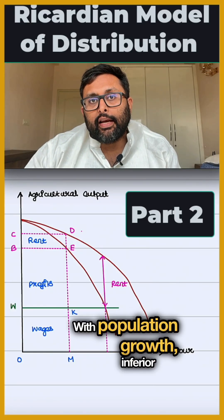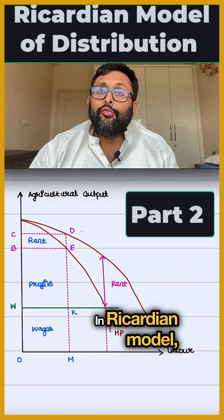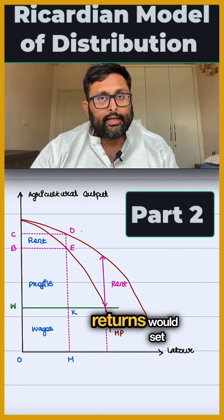With population growth, inferior land is brought under cultivation. In the Ricardian model, we assume that diminishing returns would set in.